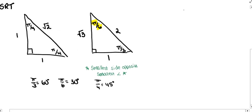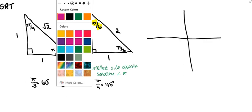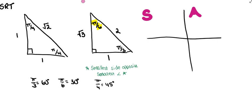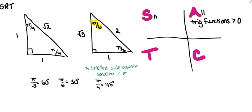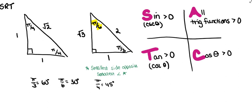In addition to your special right triangles, you need to remember 'All Students Take Calculus.' In quadrant 1, all trig functions are positive. In quadrant 2, sine and its reciprocal cosecant are positive. In quadrant 3, tangent and its reciprocal cotangent are positive. In quadrant 4, cosine and its reciprocal secant are positive. You've got to know your all students take calculus.